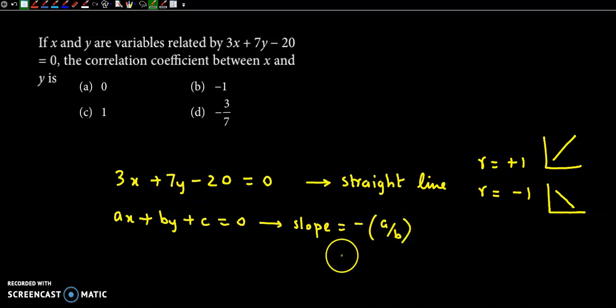Toh yeh formulae yahaan par use karthate hai. Toh slope aahe ga minus of, ab a ki value hai 3, b hai 7. So, slope humay ra aata hai, minus 3 by 7.